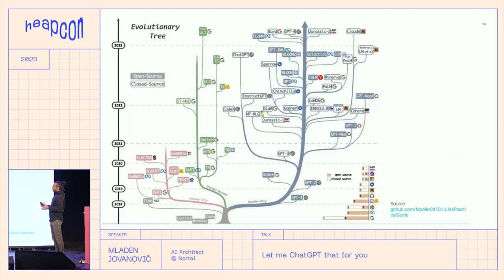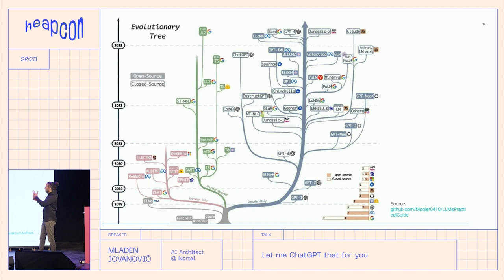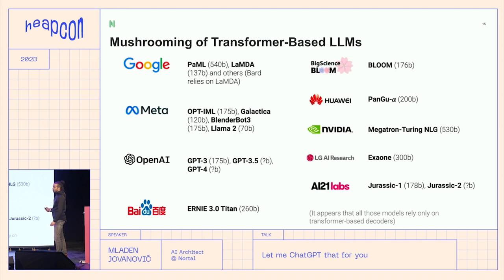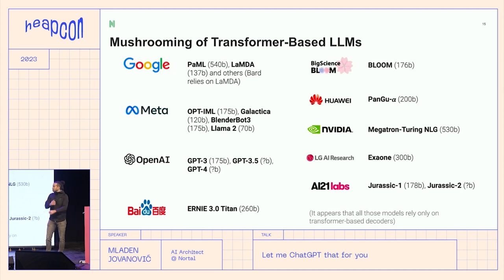When you started with one or two models, you now get this plethora — really like an evolutionary tree. People are forking one model, continuing with their own things and altering the architecture. There is a myriad of models — a mushrooming of transformer-based LLMs. Currently every big company wants to have their own, each portraying that they're the best. Evaluating large language models is really, really hard — it's not just about posing a question; the output is barely quantifiable.